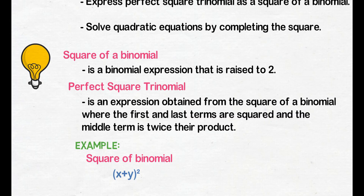Meron tayo ditong binomial na merong exponent na 2. As a review, pag sinabi nating binomial, ito ay polynomial na merong dalawang terms, nahahati ito ng plus o kaya naman ay minus sign. Sa example natin, nahati siya ng plus sign, at ang dalawang terms natin dito ay x tsaka y.